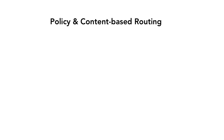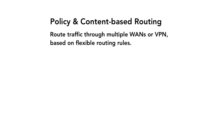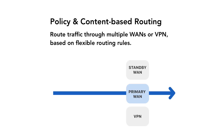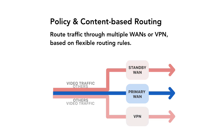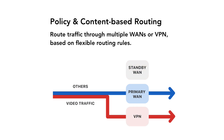Today, we will talk about the Policy and Content-Based Routing feature. This feature is useful if you have multiple WANs or are using the VPN client features. The Policy and Content-Based Routing feature will allow you to route traffic based on a set of very flexible routing rules. For example, these rules can help you selectively send all video traffic to a different WAN or through a VPN connection, while leaving the rest of the traffic to go to your service provider.